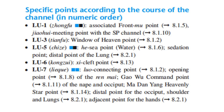Lung 6: the Xi Cleft point. Lung 7: the Luo Connecting point, the opening point of the Ren Mai, the command point for the nape and occiput, the Ma Dan Yang Heavenly Star point, a distal point for the occiput, shoulder, and lungs, and an adjacent point for the hands.